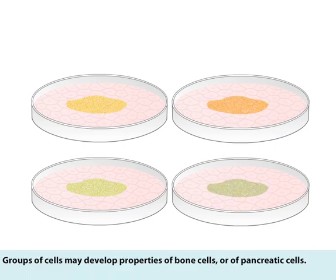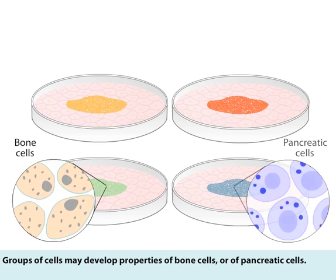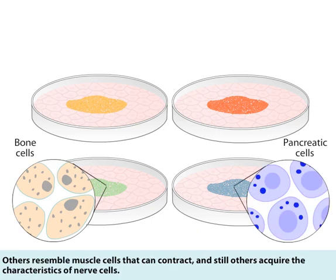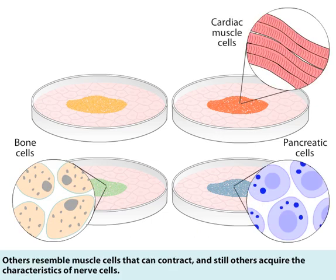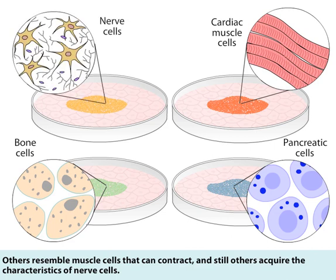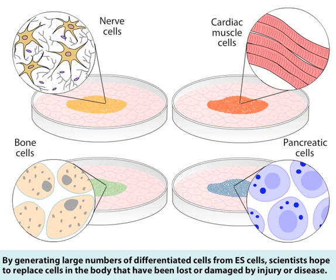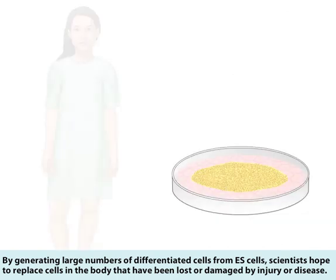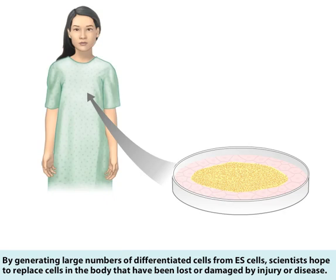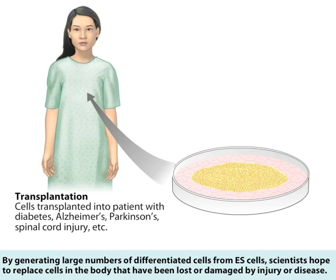Groups of cells may develop properties of bone cells or of pancreatic cells. Others resemble muscle cells that can contract, and still others acquire the characteristics of nerve cells. By generating large numbers of differentiated cells from ES cells, scientists hope to replace cells in the body that have been lost or damaged by injury or disease.